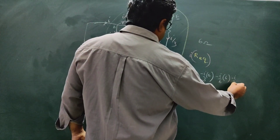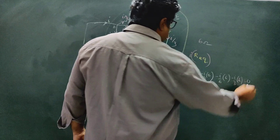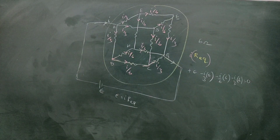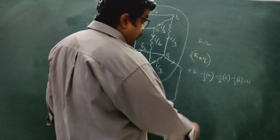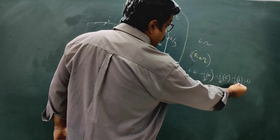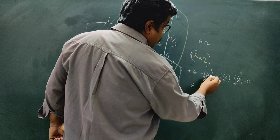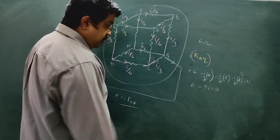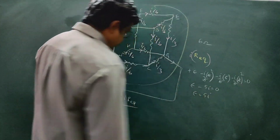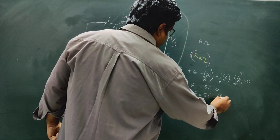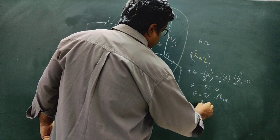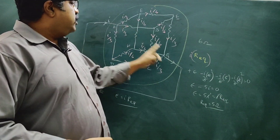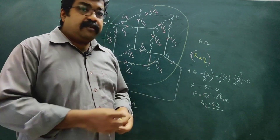So, minus I/3 into 6 equals 0 when the total potential drop across the loop is zero. This simplifies to E minus 2 minus 1 minus 2, so minus 5I is equal to 0. Then E is equal to 5I.